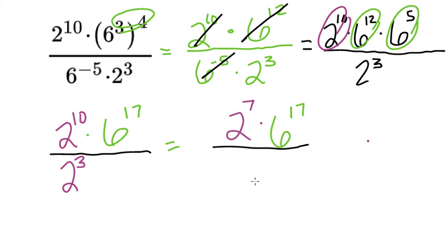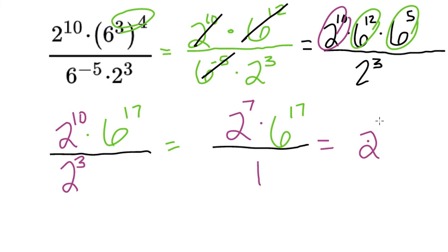There's nothing really left in the denominator, so I put a 1. When the 1 is in the denominator, you don't need it because that's saying 2 to the 7th times 6 to the 17th divided by 1. When you divide anything by 1, you get what you started with. So the final answer is 2 to the power of 7 times 6 to the power of 17.